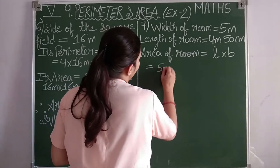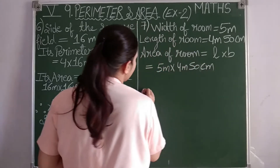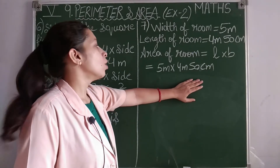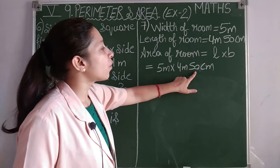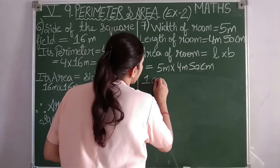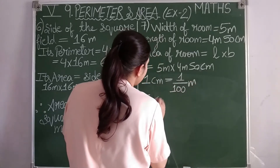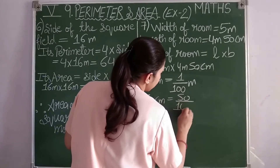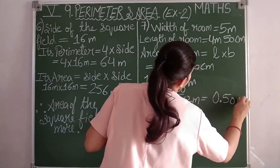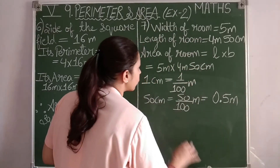Area equals 5 meters into 4 meters 50 centimeters. Since the units are different — one measurement is in meters only, the other in meters and centimeters — we convert 50 centimeters into meters. Since 1 meter equals 100 centimeters, 50 centimeters equals 50 upon 100 meters, which is 0.5 meters.